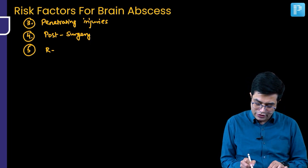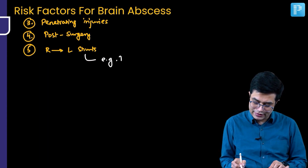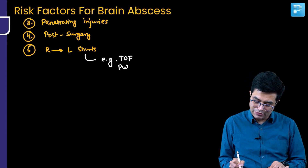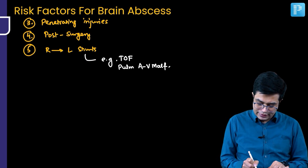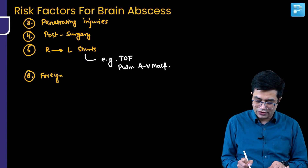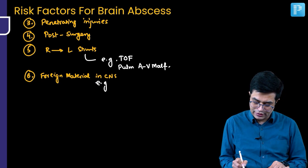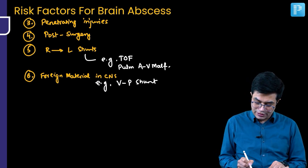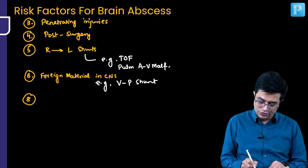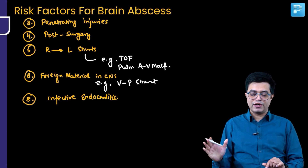Fifth, right-to-left shunts can cause brain abscess — the common example is tetralogy of Fallot, and pulmonary arteriovenous malformations can also be responsible. Sixth, foreign material transplanted or inserted in the CNS, such as an infected ventriculo-peritoneal (VP) shunt, can produce brain abscess. Seventh, infective endocarditis is also an independent risk factor for brain abscess.